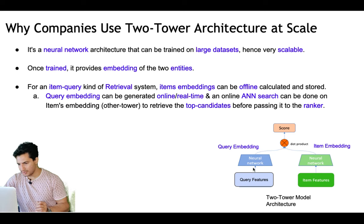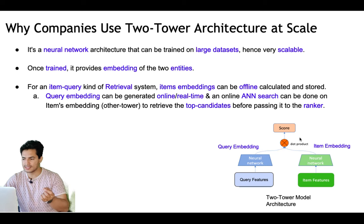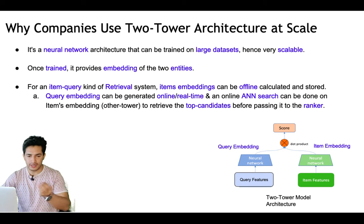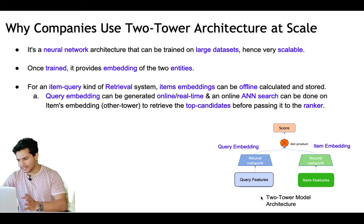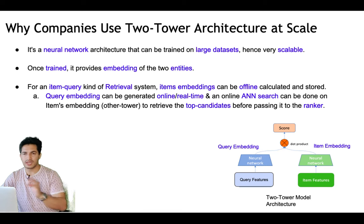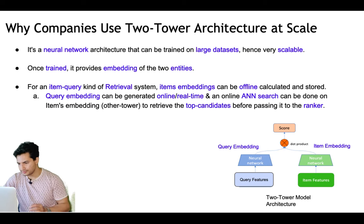The item embeddings can be stored in a key-value store, and as soon as the user types something the query embedding can be generated online in real time. From all the item embeddings you can do a fast approximate nearest neighbor search. I have videos on ANN and FAISS which I'll add in the description. The idea is that one tower is kept offline and the other is online, so it scales really well.